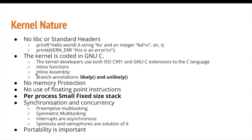GNU C also has the feature of inline assembly code, so inside C we can embed architecture-specific instructions. It also has specific branch annotation functions — likely and unlikely — which are used when we know something a priori. In kernel space there is no memory protection because there is no one to monitor it, but when a user-space process tries to access an illegal memory location, the kernel can trap it and kill the process.